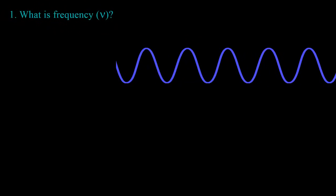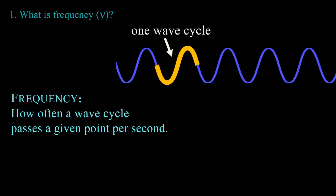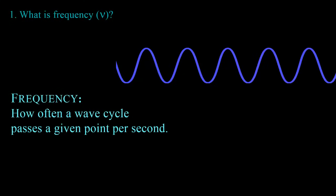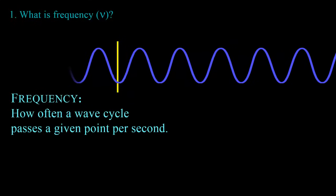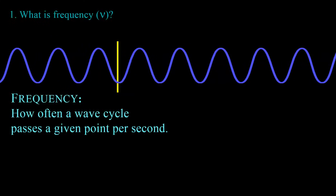First question: what is frequency? The symbol for frequency is the Greek letter nu, which unfortunately bears a striking resemblance to the letter v, but it is nu. We define frequency as how often a wave cycle passes through a given point per second. A wave cycle is a single up-down motion, so we can think of the wave as consisting of a series of wave cycles. We will put a line at the wave front to indicate a point in space, so you can see that a moving wave has some amount of wave cycles passing a given point per unit time.